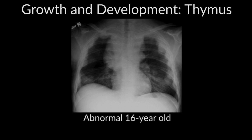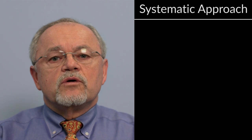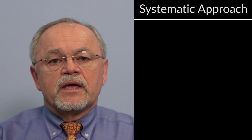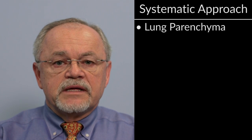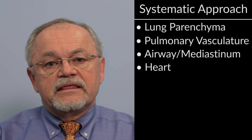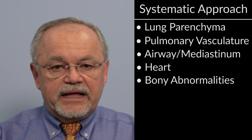If you have a 16-year-old with a large anterior mediastinal mass, such as the x-ray on the screen in a child who has neurofibromatosis, this would be highly abnormal at that age and not quite as abnormal in a two-month-old. Let's start with a systematic approach to the chest x-ray. We will look at the lung parenchyma, the pulmonary vasculature, the airway and mediastinum, the heart, and bony abnormalities as well.